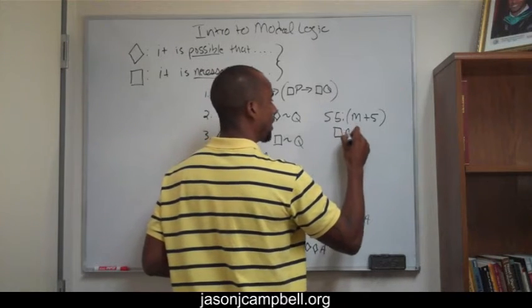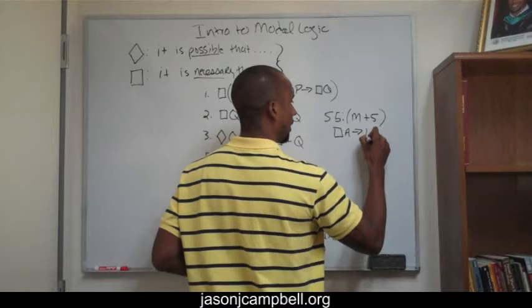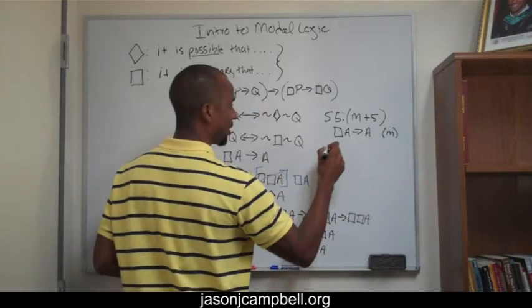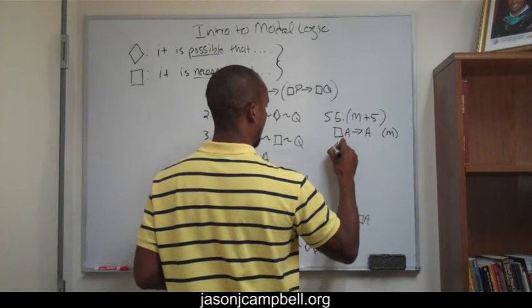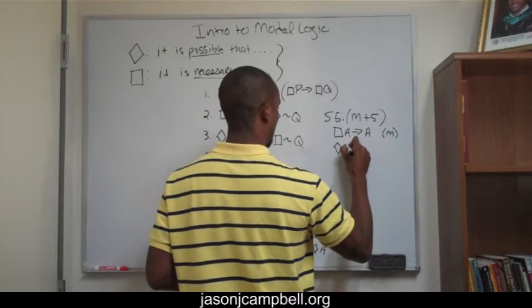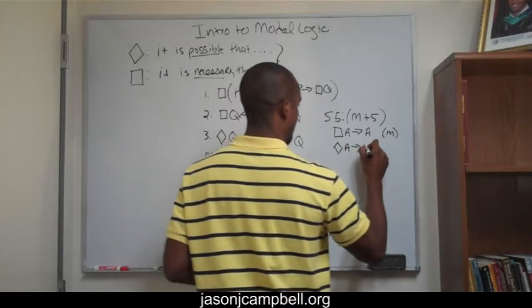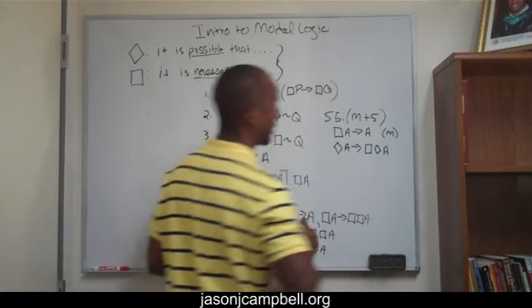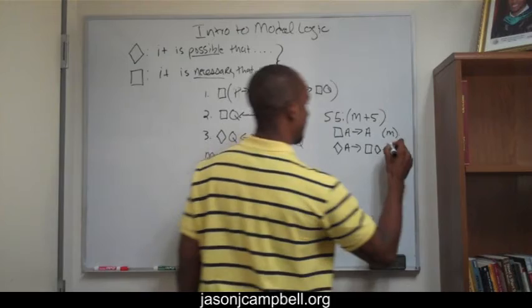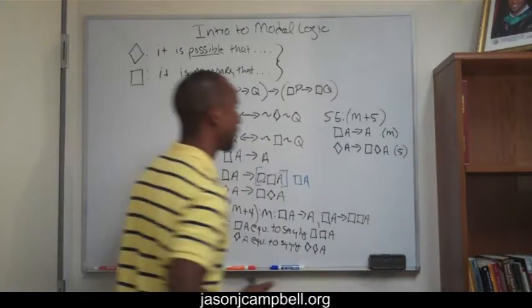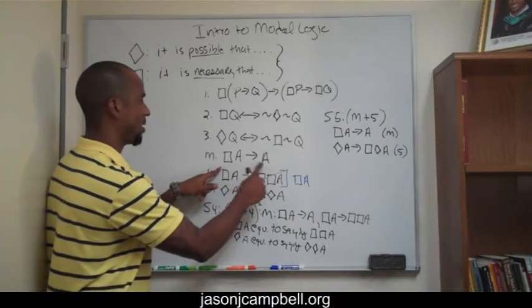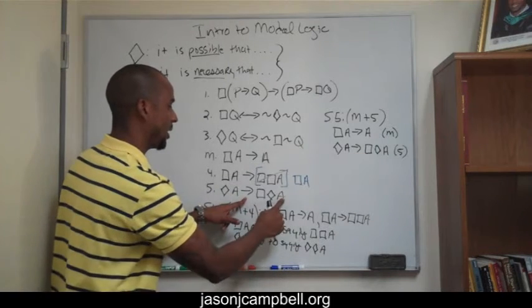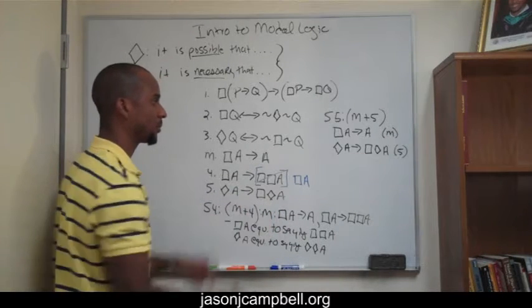That is, if A is necessary then A, and this is M. And then 5 is what? 5 is, if A is possible, then A is necessarily possible. And this is 5. So M is, if A is necessary then A, and then 5 is, if A is necessary then A is necessarily possible.